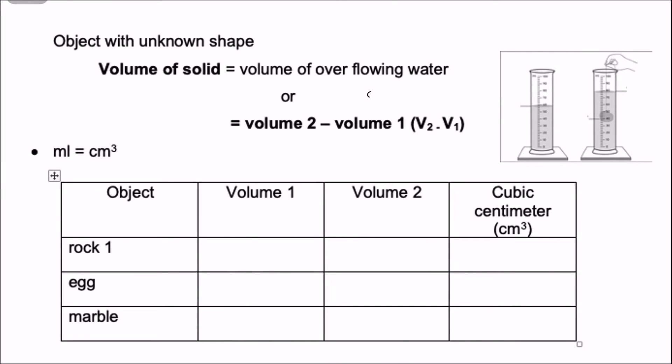So let us find out if your answers are correct. Rock: what is volume 1? 30. And volume 2? 35. What is your answer? 5 cubic centimeter.